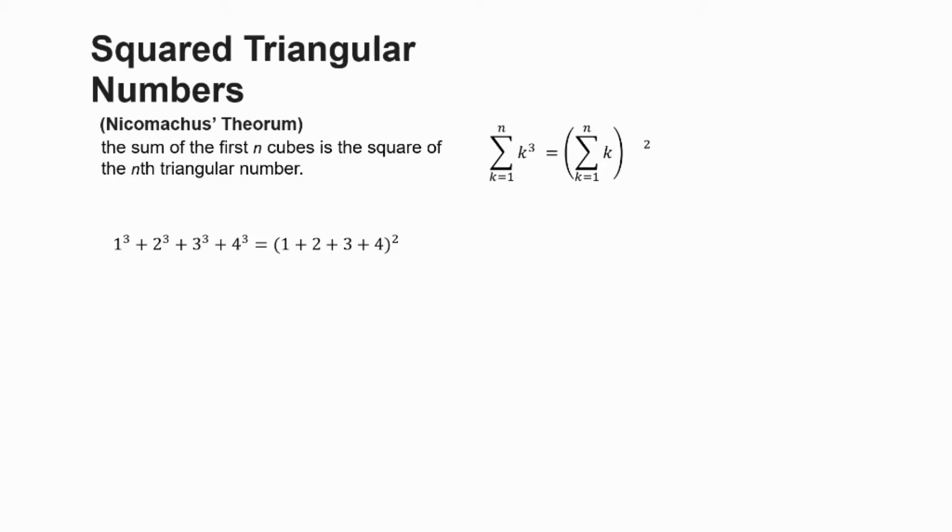Let's check and make sure that that arithmetic makes sense. 1 cubed is 1, 2 cubed is 8, 3 cubed is 27, and 4 cubed is 64. Add all of that together and you get our big friend 100. Same thing on the right hand of this equation: 1 plus 2 plus 3 plus 4 is 10, and of course, 10 squared is also 100.